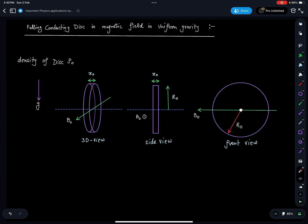Here there is a case study where we are releasing a conducting disk in uniform magnetic field in uniform gravity. These are the three orientations which I have drawn for this disk - a 3D view, side view showing the side profile with thickness x₀ and radius r₀ where magnetic field is along this direction, and front view where magnetic field comes in this direction. I hope this entire part is visible to you easily.